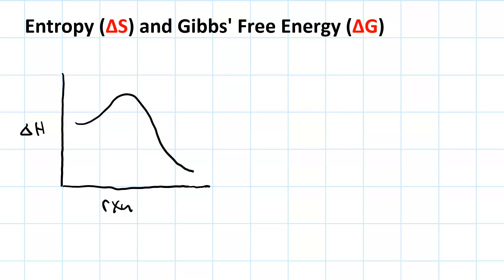Consider this diagram. The y-axis is delta H, or change in enthalpy, and the x-axis is reaction coordinate — think of it as progress of the reaction. So we start out at reactants, go through a transition state, which we symbolize with the double dagger symbol, and we end up at products.